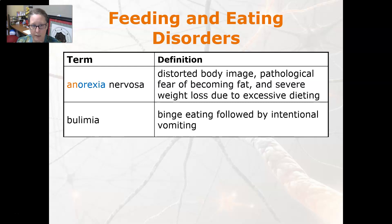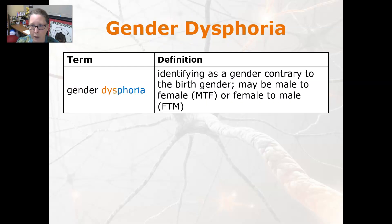Gender dysphoria is identifying as a gender contrary to the birth gender — for example, male to female or female to male.